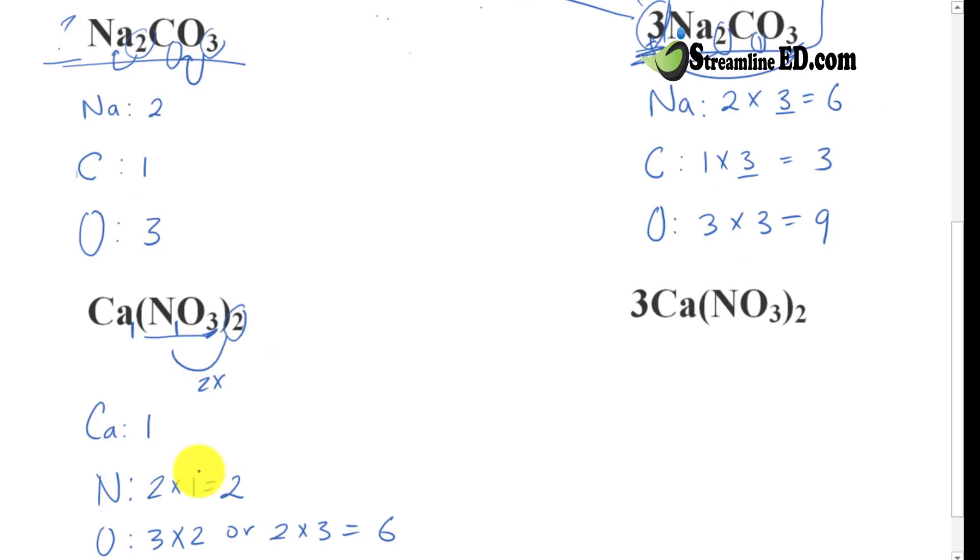And let's look at this with a combination of the coefficients. Look at calcium. Again, this tells you there are 3 times of the whole entire thing. 3 times, because that 3 was there. So, for calcium, if that's 3 times, we have 1, we have 1 times 3, give you 3.